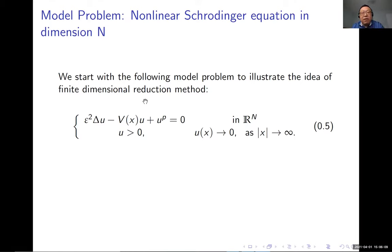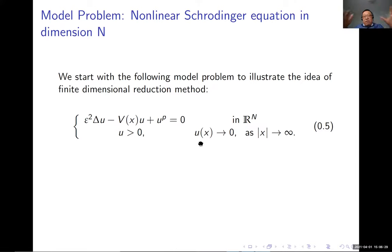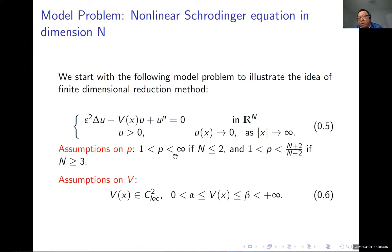Let me now start with the model problem. Today I want to do the baby problem to illustrate what is the basic reduction method and what are its key ingredients. The model problem is a nonlinear Schrödinger equation: ε²Δu + u − V(x)u + u^p = 0, where we look for solutions that decay to zero — so-called soliton solutions. We assume p is subcritical, V is C², and V is bounded from below and above.